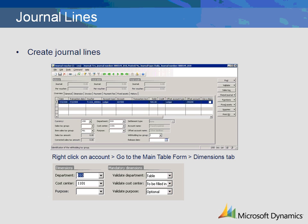Let's look at the validation rules for this account. When you right-click on account 601500 and select Go to the Main Table, the Chart of Accounts form will open. You can review dimension details on the Dimension tab. The department dimension is set up with a validation rule of Table, which indicates that there is only one valid dimension. The dimension listed on the account will default into the transaction and cannot be changed. In this example, the department is 010 Administration.